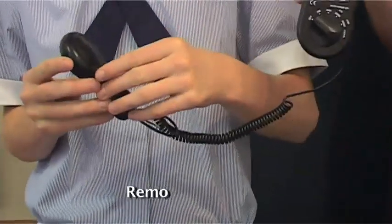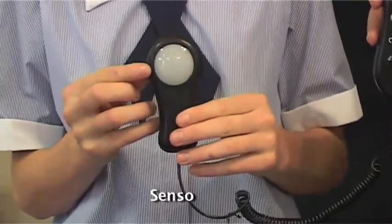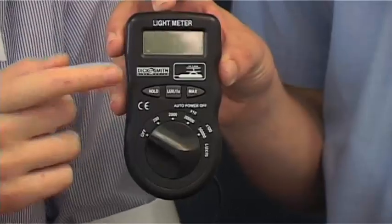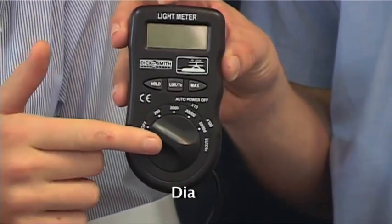Firstly, remove the cover. This is the sensor. This is the display screen. This is the hold button. And this is the dial.